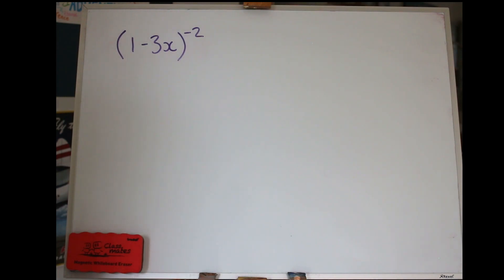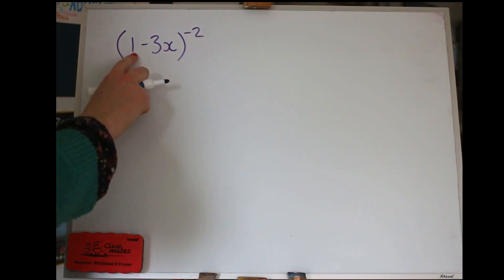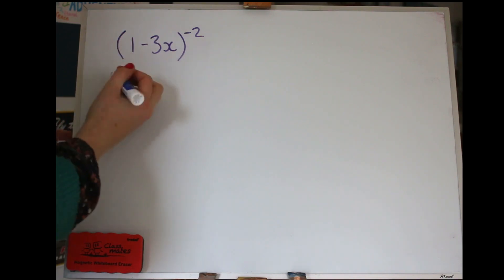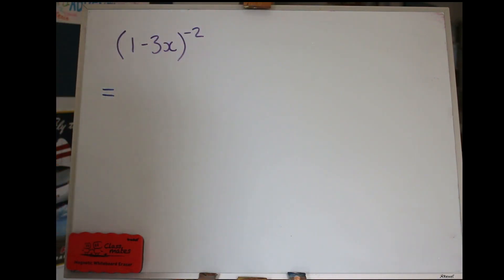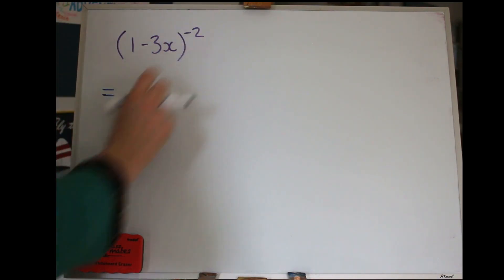Alright, here we have our first example. For the first example, I'm going to keep this number as 1, so we don't need to worry about that bit that I said. But this here, minus 3X, that's going to be the bit in the formula that says X. And then our N here, the power is minus 2.